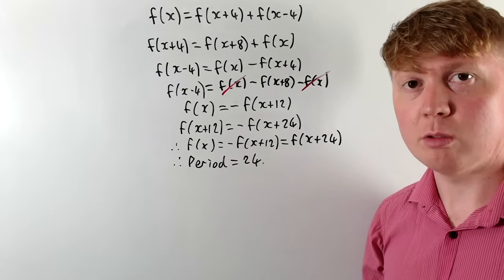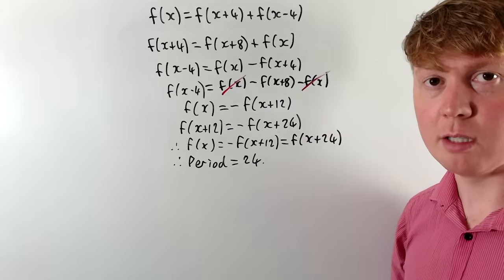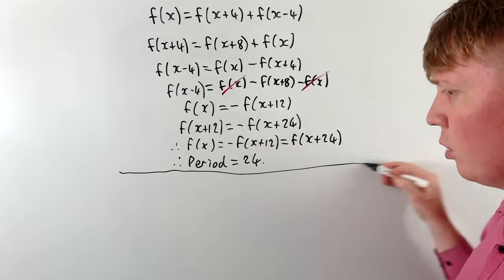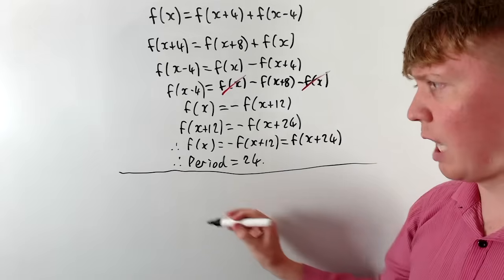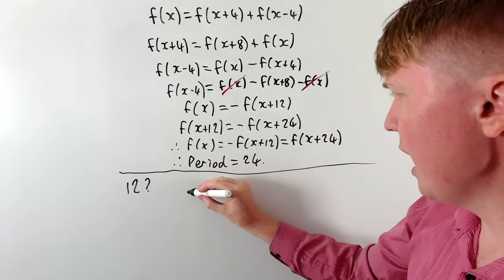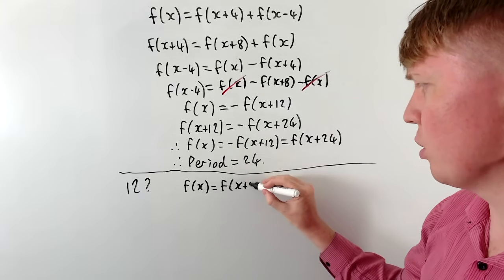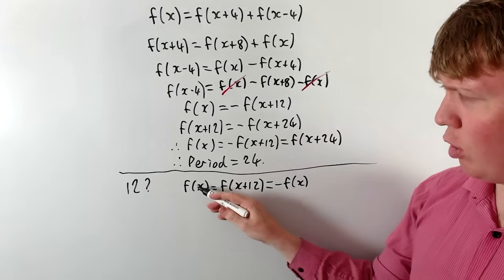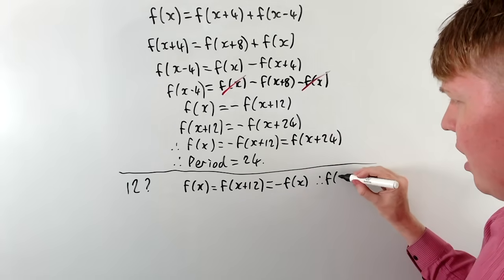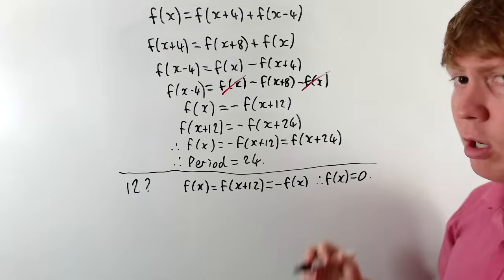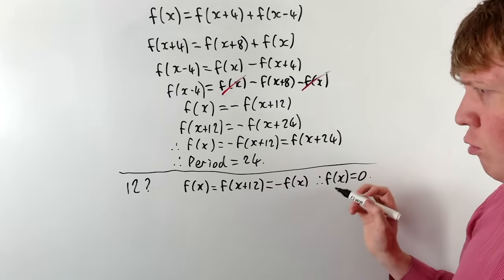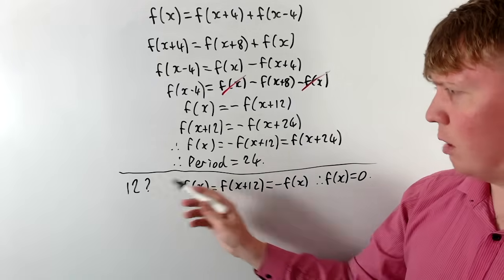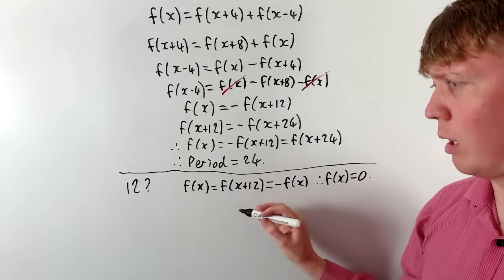But at this point we're not technically done, because we've shown the function repeats every 24 units, but it could have a smaller period. For example, if it repeated every 12, it would also repeat every 24. So we need to rule out all the possible factors of 24. If the period were 12, we'd have f(x) = f(x+12) for all x. But we've seen that f(x+12) = -f(x), so f(x) = -f(x), meaning f(x) = 0 for all x — a trivial solution, so 12 is ruled out.